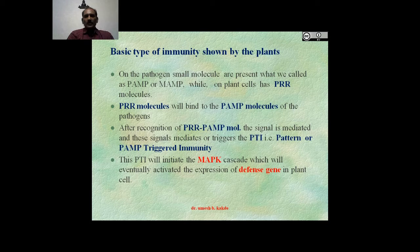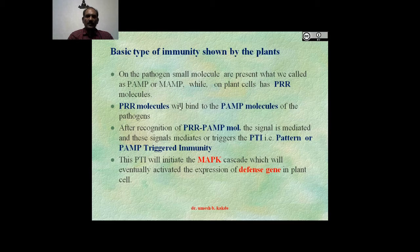There are two types of immunity — basic and advanced. We will first see the basic type of immunity shown by plants against the pathogen. Small molecules called PAMP or MAMP are present, and the plant cell has PRR protein molecules. These PRR molecules will bind with PAMP molecules, producing signals that mediate and trigger PTI, that is pattern- or PAMP-triggered immunity.